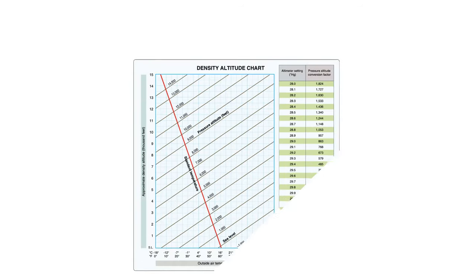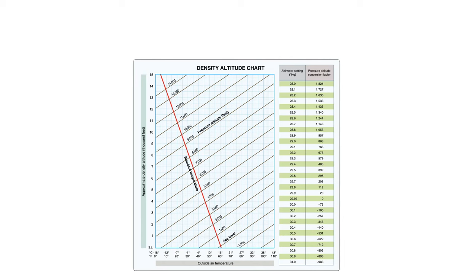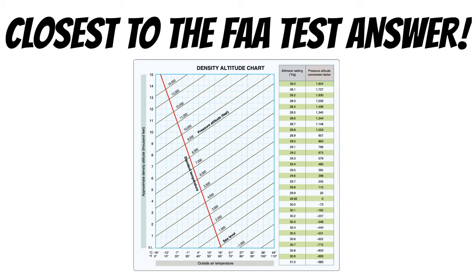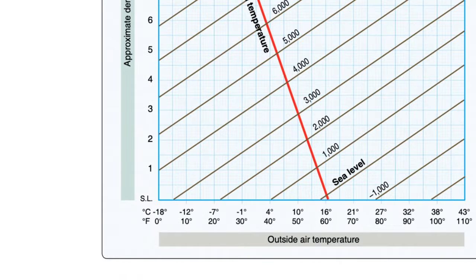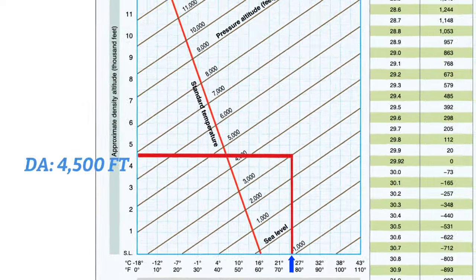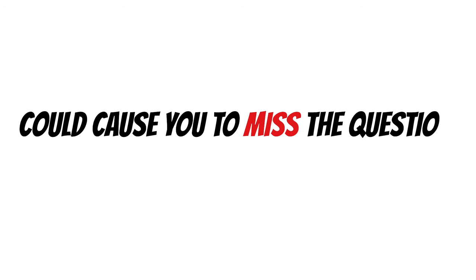The next method is to use a chart. This is the method you need to use on the written exam because it'll get you closest to the FAA's test answer. Start with your temperature at the bottom — 25 degrees Celsius — then move up until we hit a pressure altitude of 3,000 feet, then move straight over to get a density altitude of about 4,500 feet. That's about a 500 foot difference from the flight computer, which could be the difference between a right and wrong answer on the written test.